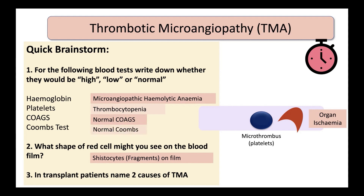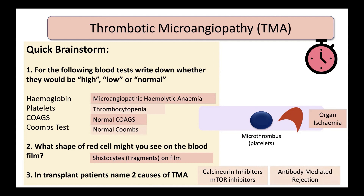The Coombs test is also normal in TMA, since it checks for autoimmune anemia and there's no autoimmune process here. The two causes of TMA in a transplant patient are: first, drugs — particularly calcineurin inhibitors and mTOR inhibitors (if choosing in an MCQ, pick calcineurin inhibitors); and second, antibody-mediated rejection. You can distinguish them because antibody-mediated rejection will show glomerulitis and peritubular capillaritis on biopsy, whereas drug-induced TMA will show TMA changes alone.